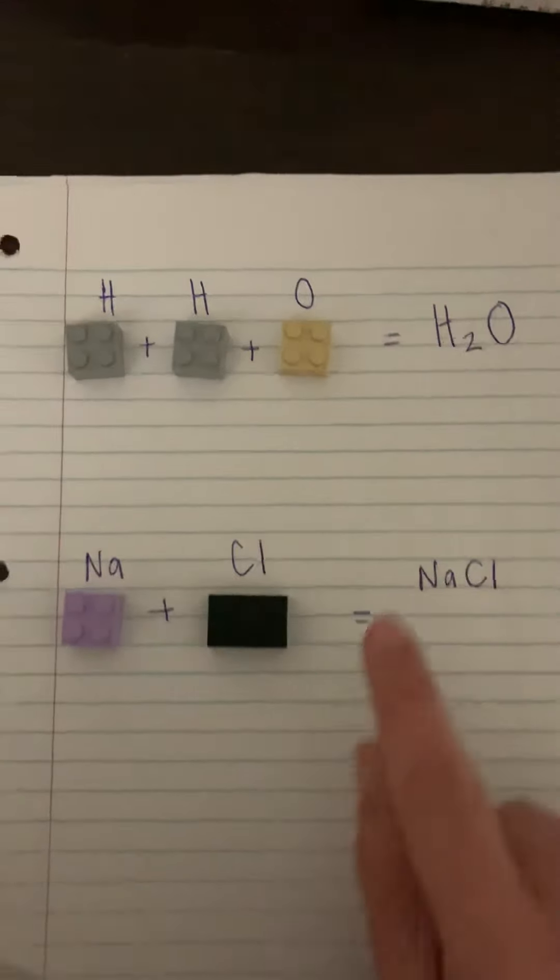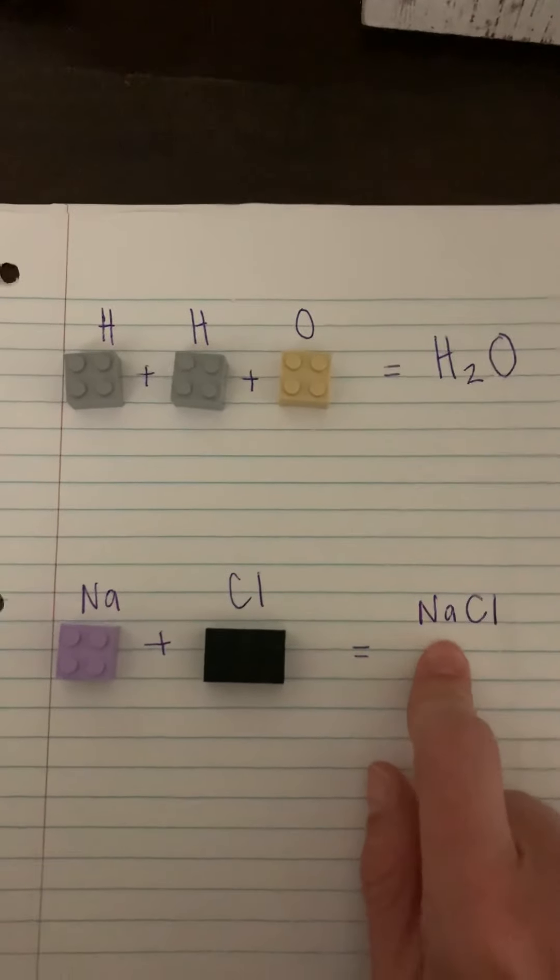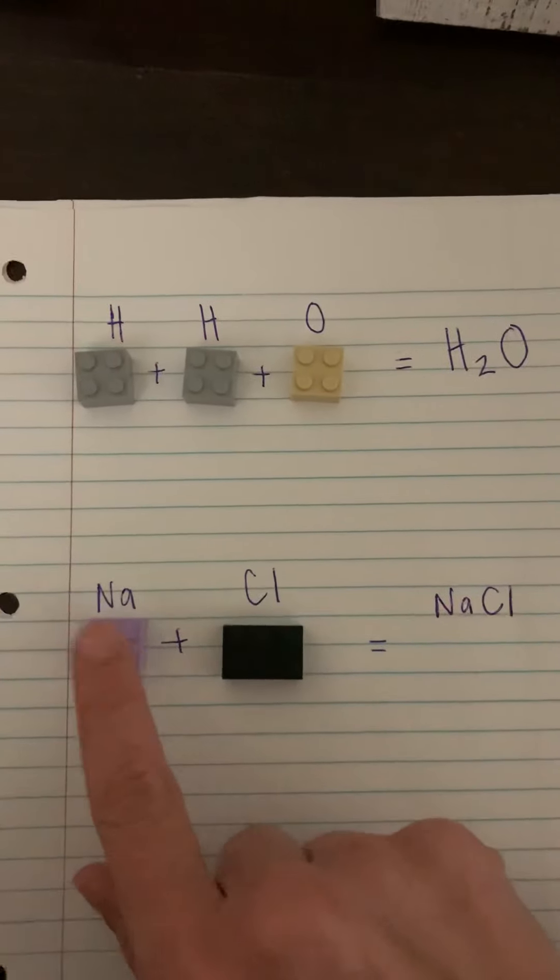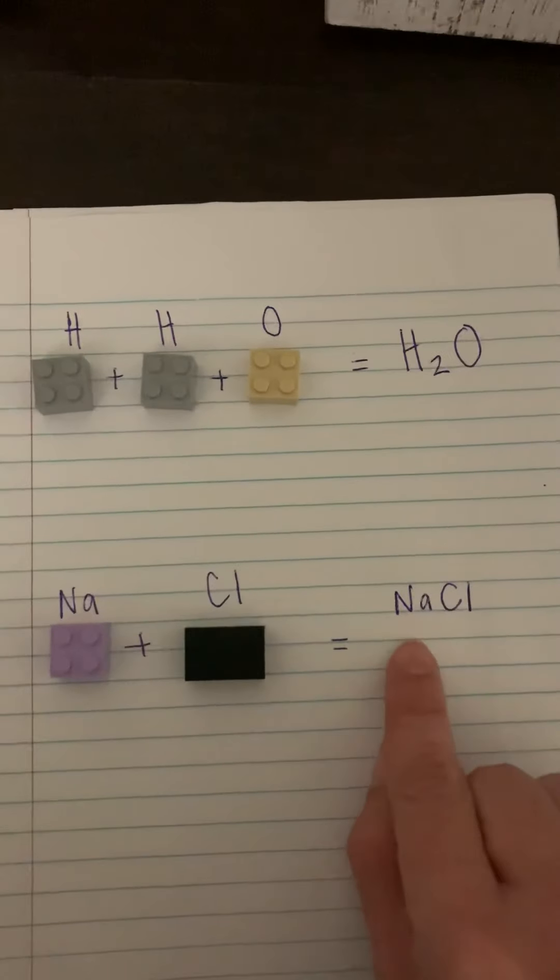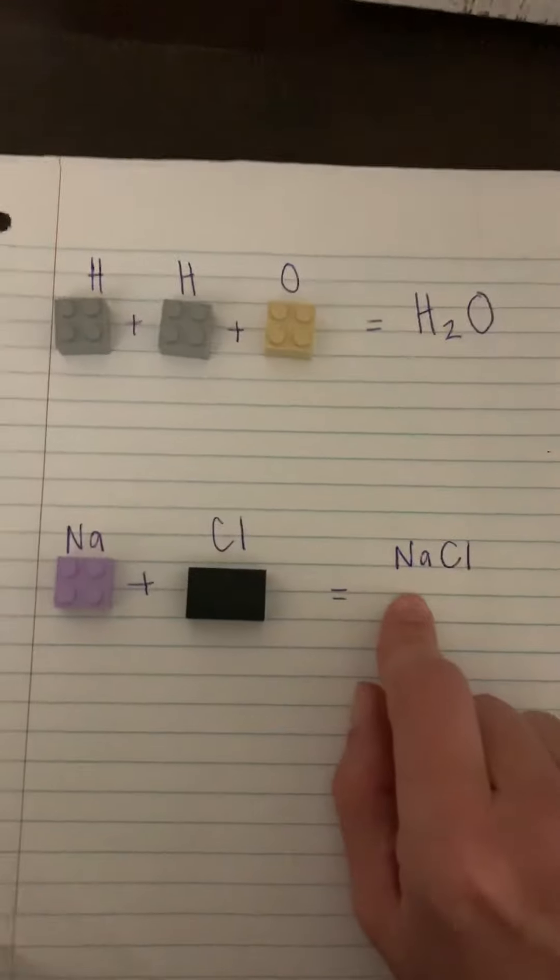Okay, so NaCl, which is table salt, we have one sodium, we have one chlorine. And when they're chemically combined, they make sodium chloride.